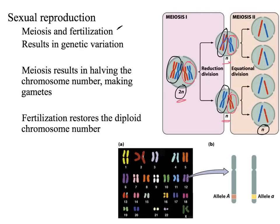It is in meiosis II that we get the separation of sister chromatids from each other. Notice that going from the end of meiosis I to the end of meiosis II, the cells stay haploid. The first division of meiosis I is referred to as the reduction division, because that's where we go from diploid to haploid. Then meiosis II is called the equational division, where we stay haploid to haploid.